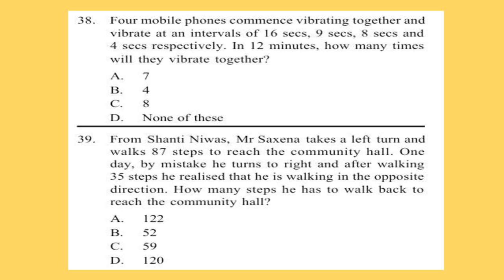Question 39: From Shanti Nivas, Mr. Saxena takes a left turn and walks 87 steps to reach the community hall. One day, by mistake he turns right and walks. After walking 35 steps he realized that he is walking in the opposite direction. How many steps does he have to walk back to reach the community hall?